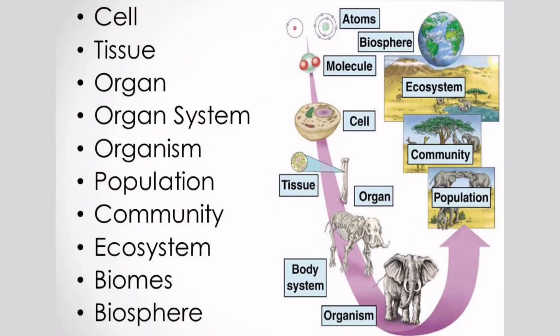Again, the levels of biological organization start with cell, tissue, organ, organ system, organism, population, community, ecosystem, biomes, and biosphere.